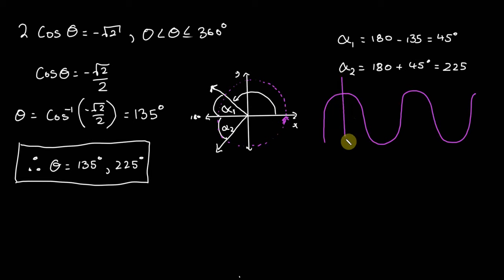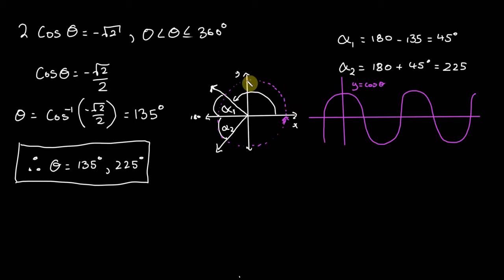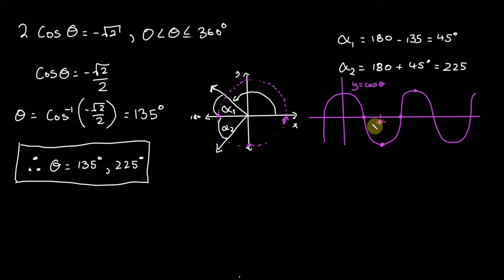Let me sketch that. That's y equals cos theta — just a rough sketch. As we move up to 90 degrees, cos equals zero; at 180 degrees our value is at the minimum; at 270 it's right there; and at 360 it's back up. In our case, cosine of theta equals negative root 2 over 2, and we found 135 degrees. All we've done is used symmetry but via algebra, because we know there's going to be another solution, and we've found it at 225 degrees.